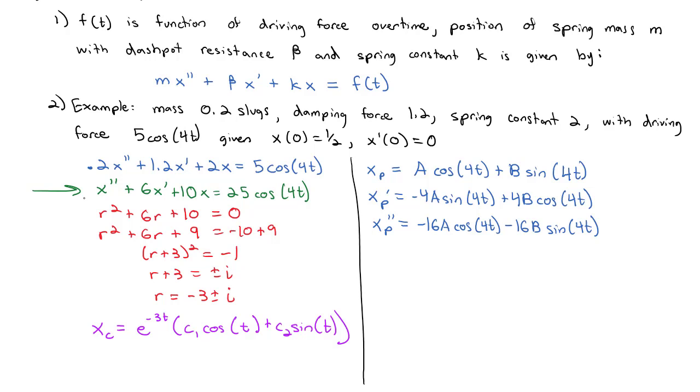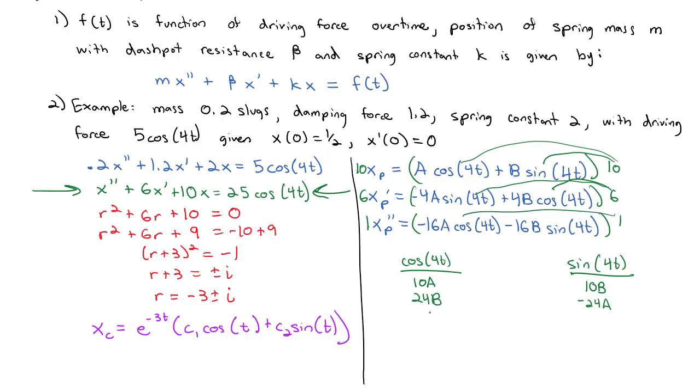I'm going to use the green line because I don't want to deal with the decimals. So we've got one x'', six x's, and ten x's. I'm going to multiply both sides by those coefficients. When I do, I'm going to organize my results under the cos(4t) and the sin(4t). We've got 10A cosines, 10B sines, -24A on the sine, 24B on the cosine, -16A on the cosine, and -16B on the sine.